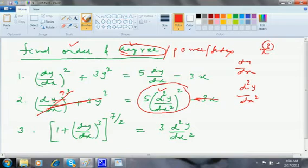This is the highest order. There I will see this one's index - what is it? 2. That's it. Order is 2, degree is 2. Similarly, dy/dx, dy/dx - both orders are the same, so I will take the highest degree.